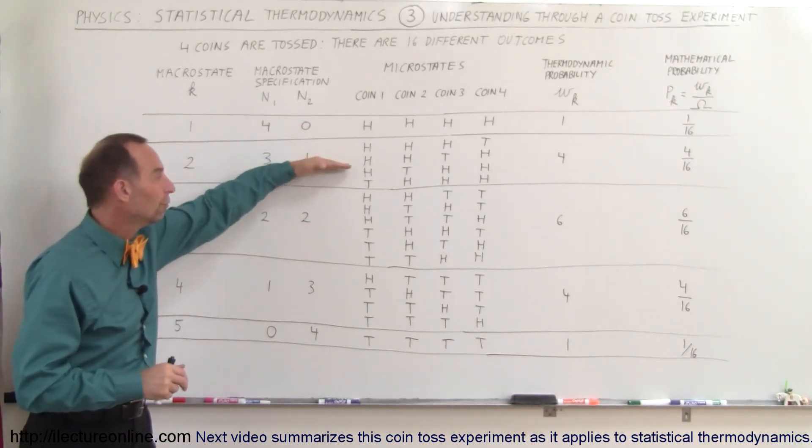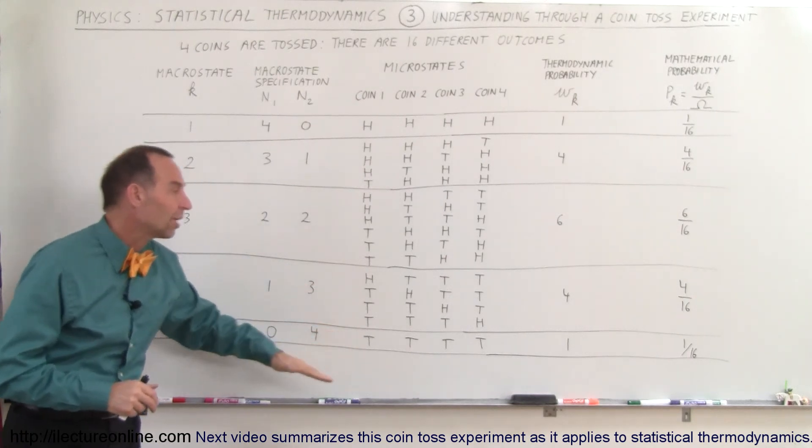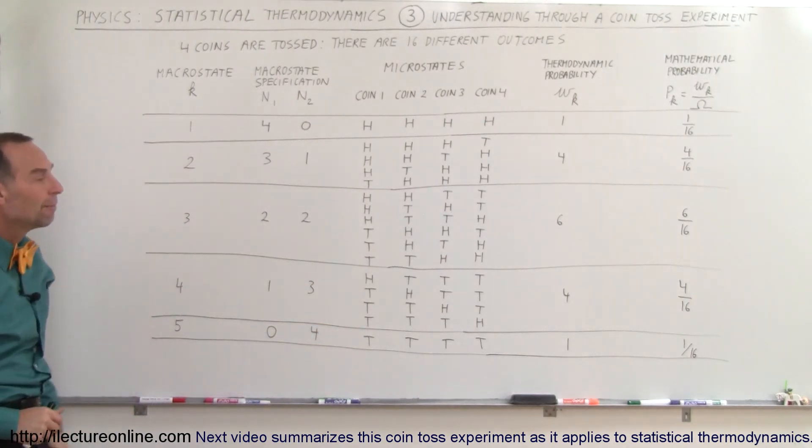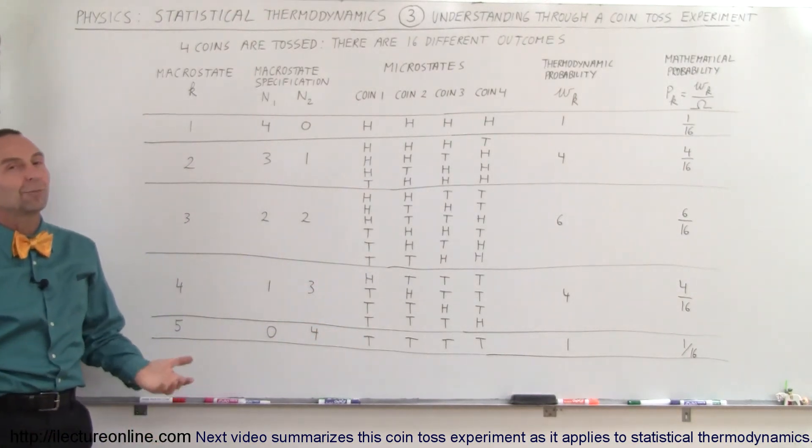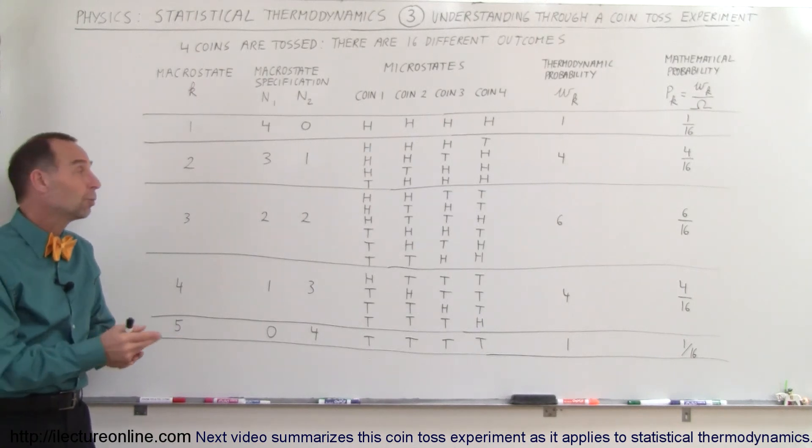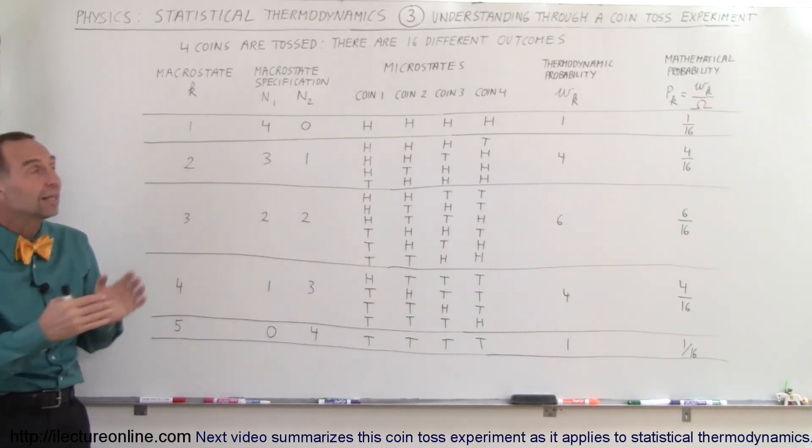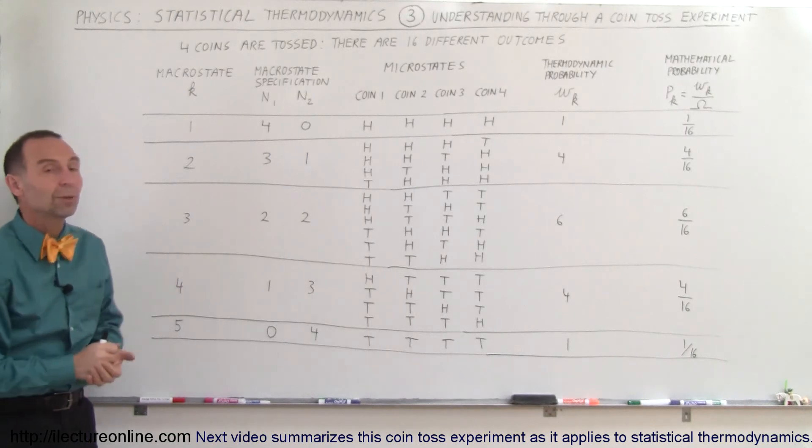You can see we have one, four, six, four, and one micro states for these five macro states. Hopefully, that makes clear the difference between a micro state and a macro state, and how we use the notation to implement that.